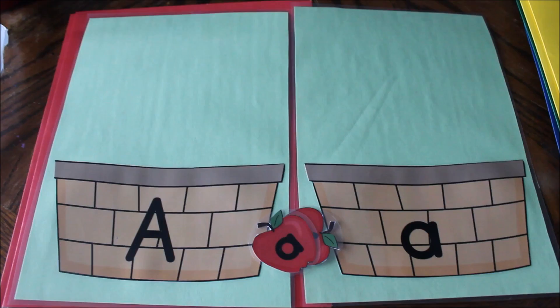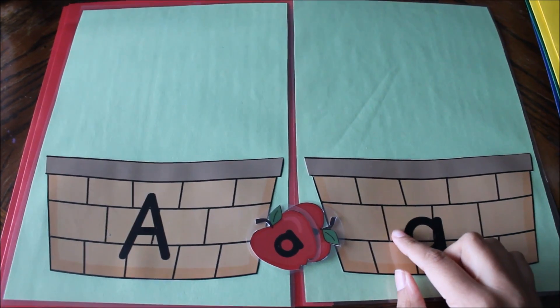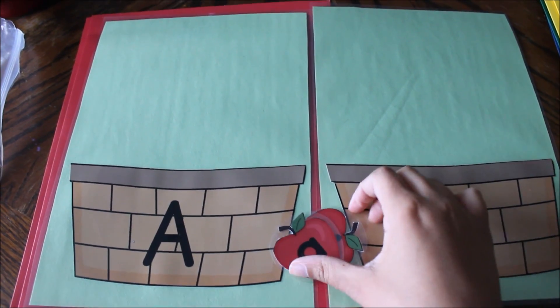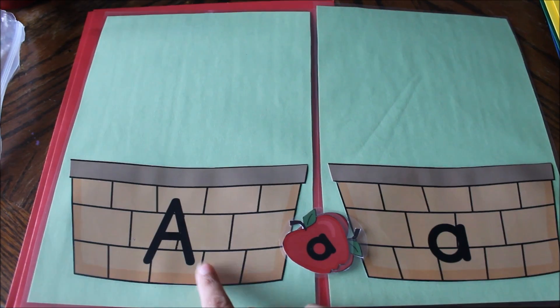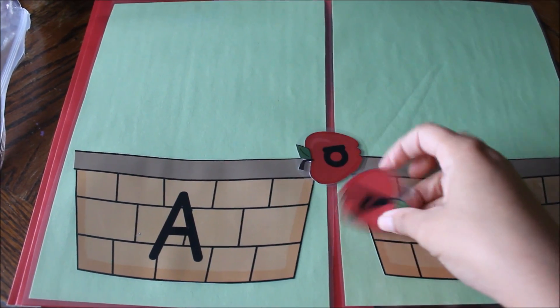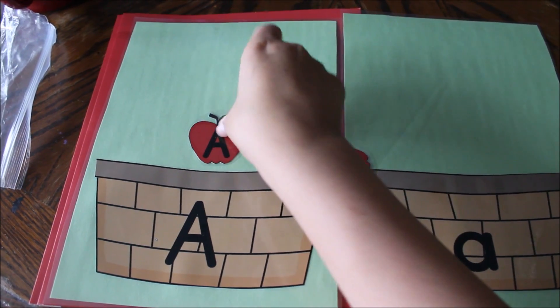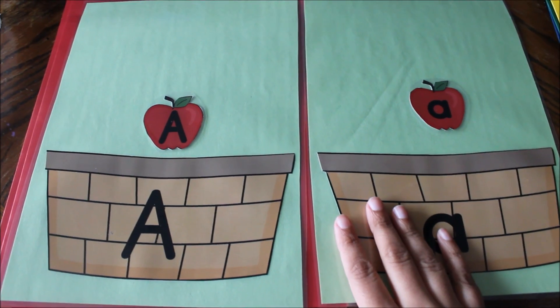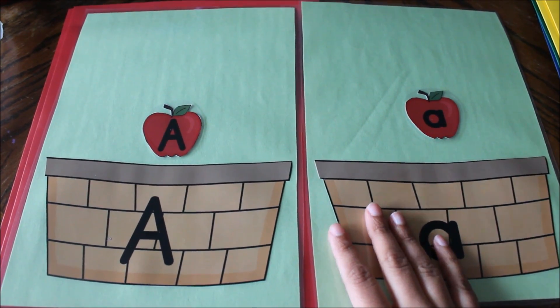So this is today's exercise on Monday, the basket apple sorting. What we have is a basket with big A, a basket with little A, and then these cutouts, there's eight of each. So what he would have to do is match big A and little A and he did really really good on this.